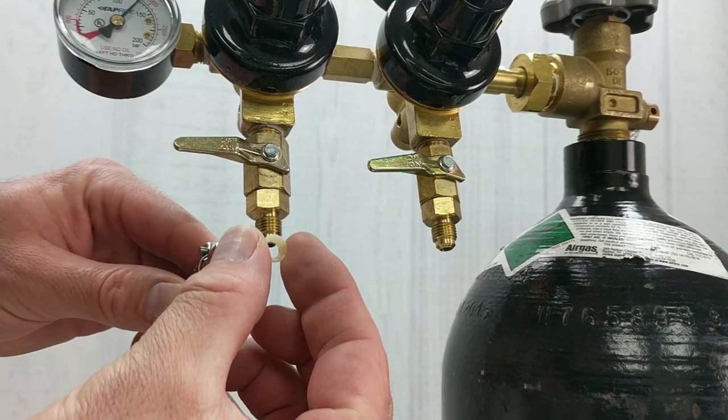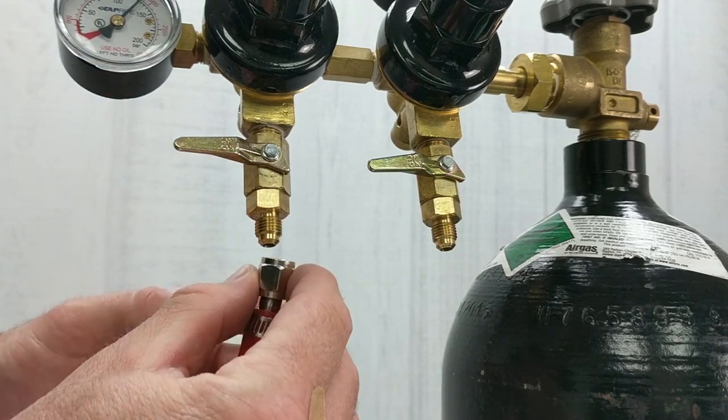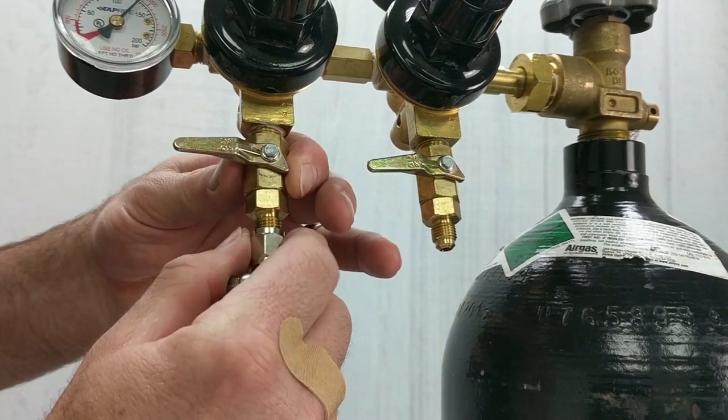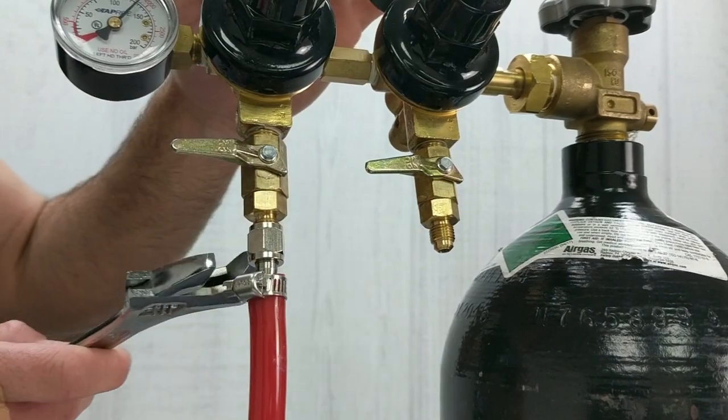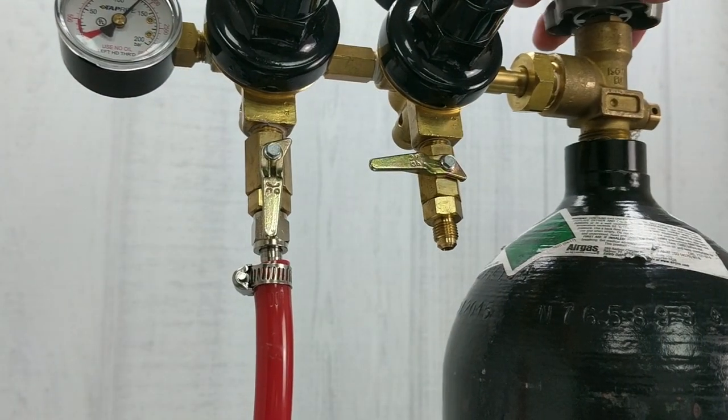We always recommend putting a tailpiece washer in between these MFL swivel nuts. Once hand tightened, secure tightly with a wrench. Turn your gas back on and spray again to check for any leaks.